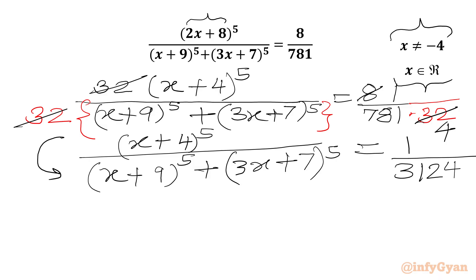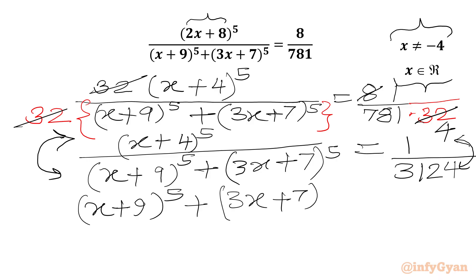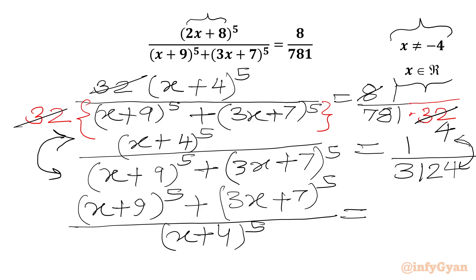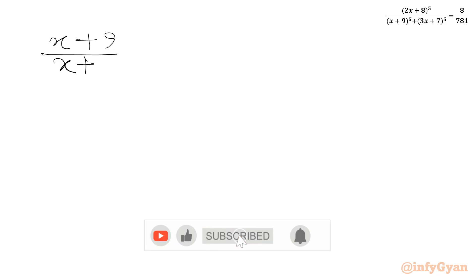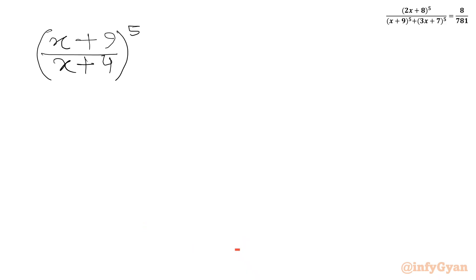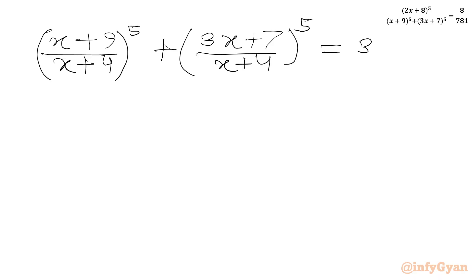Now I will take the reciprocal of both sides. Since x cannot be negative 4, I can write the equation: (x+9)⁵ plus (3x+7)⁵, over (x+4)⁵, equal to the reciprocal of 1 over 3124, which is 3124. Now we will split the LHS numerator with respect to the denominator (x+4)⁵, giving (x+9)/(x+4) whole power 5 plus (3x+7)/(x+4) whole power 5, equal to 3124.